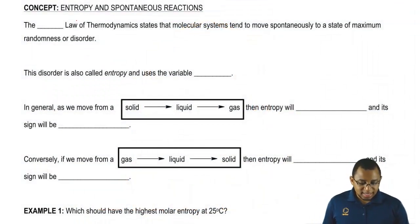The second law of thermodynamics states that molecular systems tend to move spontaneously to a state of maximum disorder or randomness.